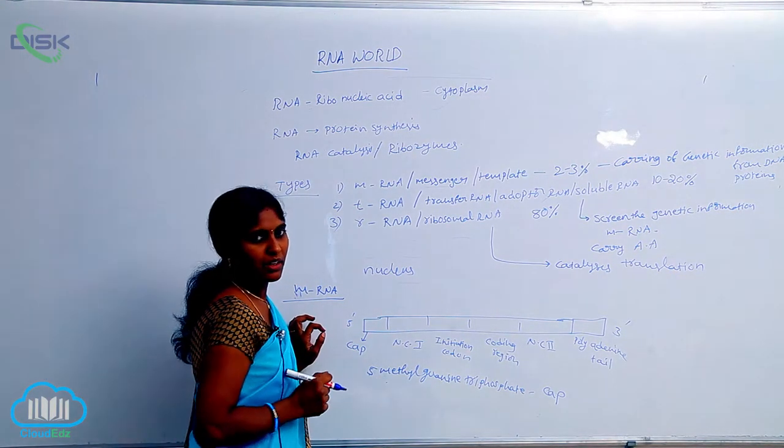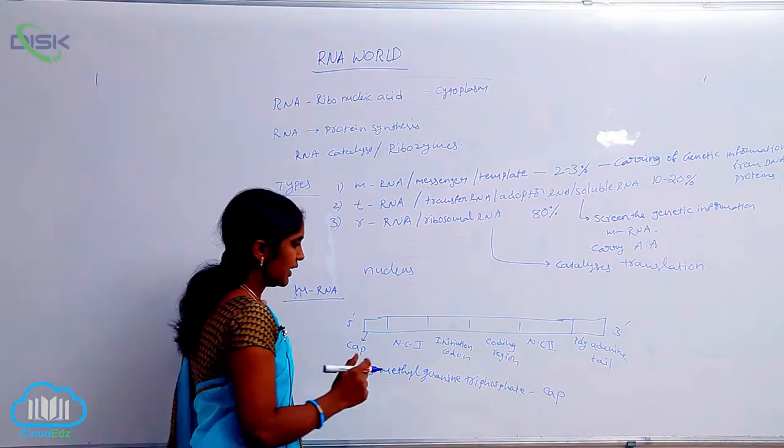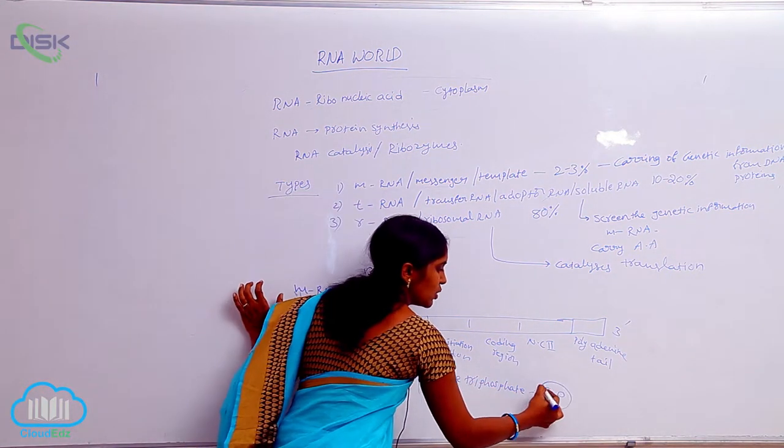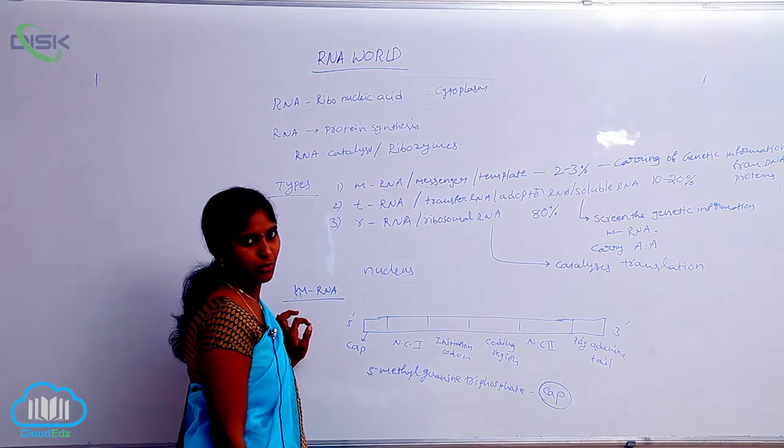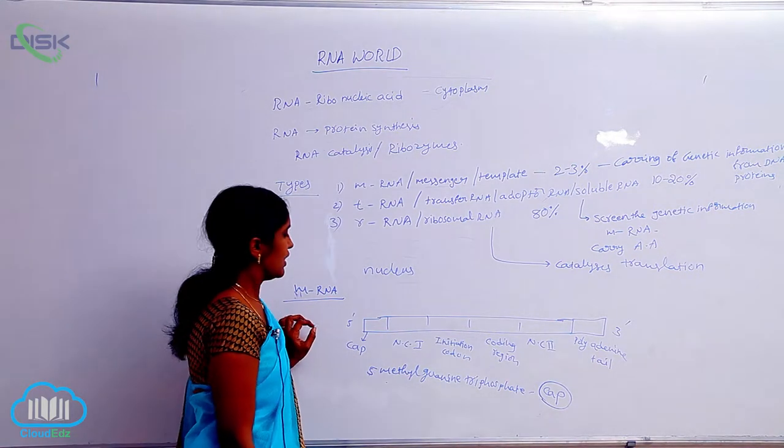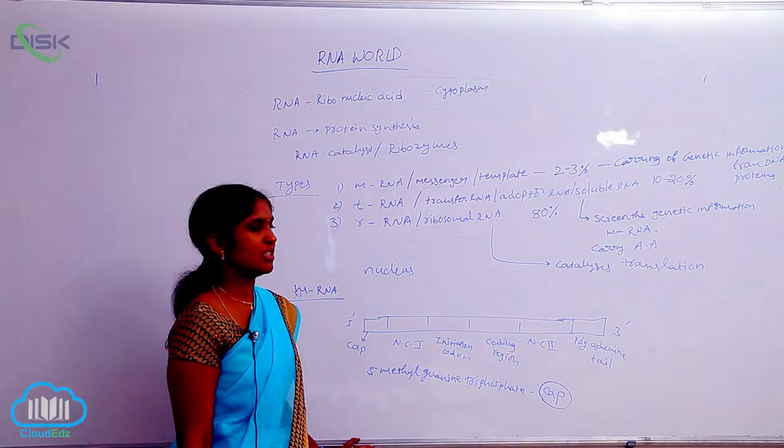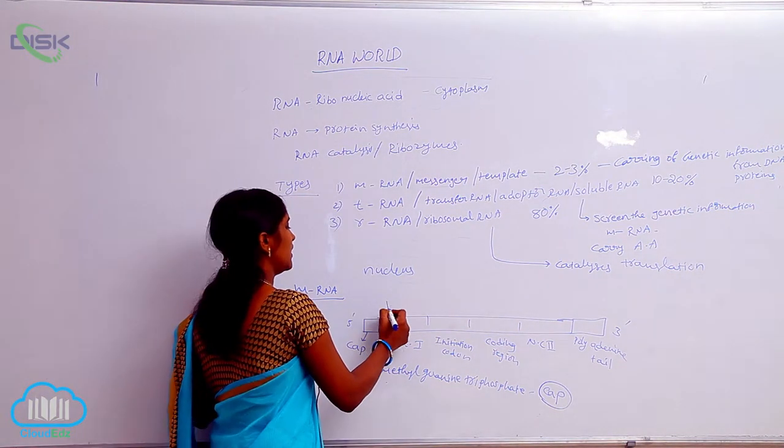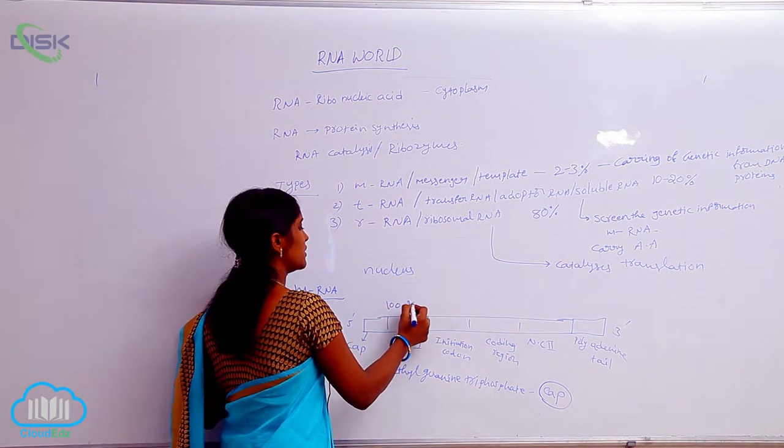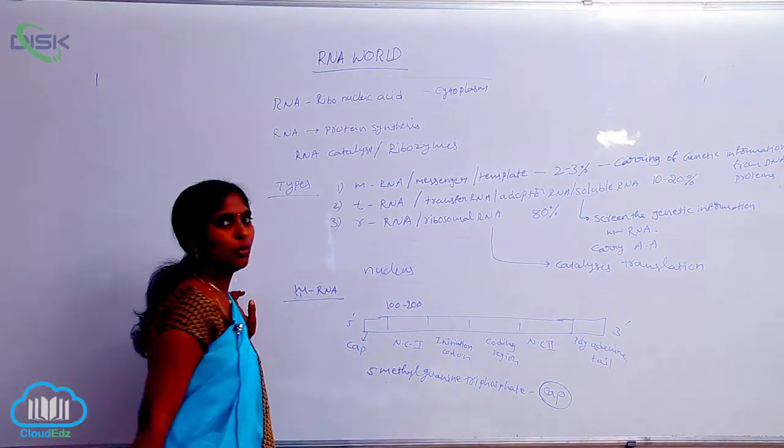Without CAP, the mRNA is unstable. And the CAP promotes joining to the ribosomal site. Non-coding region 1 is approximately 100 to 200 base pairs in length. Here, no work.